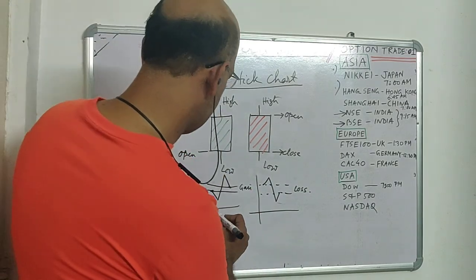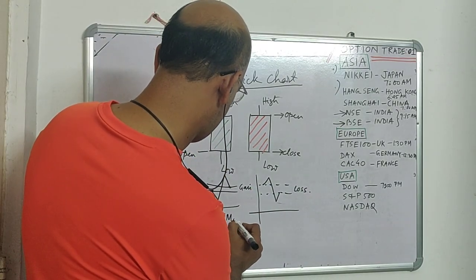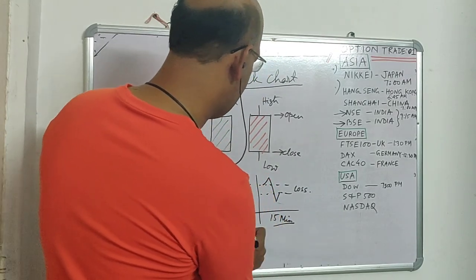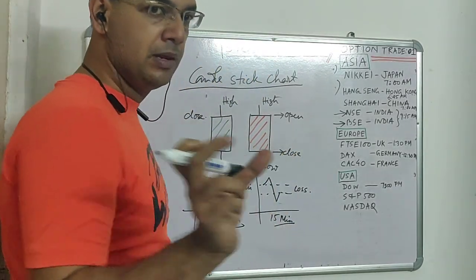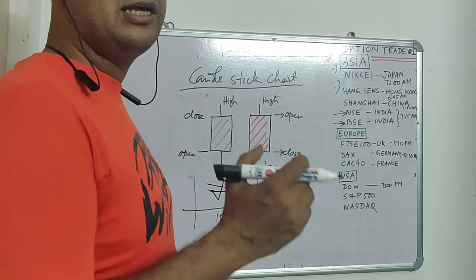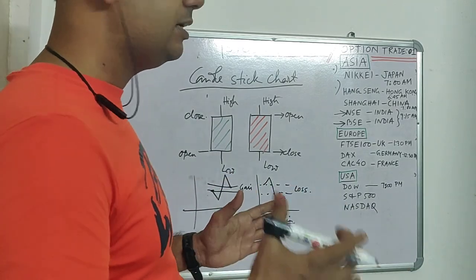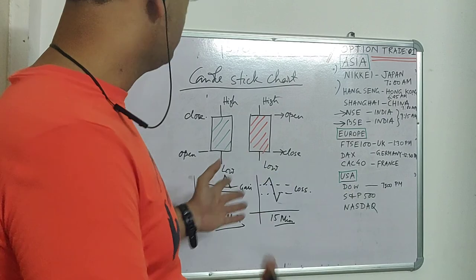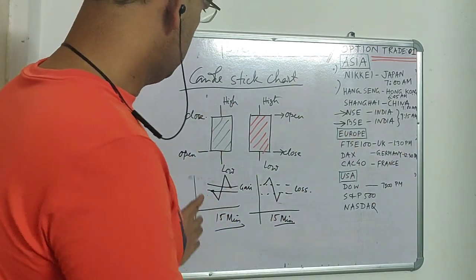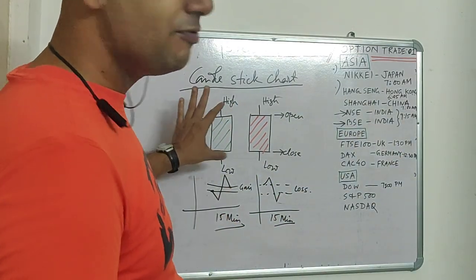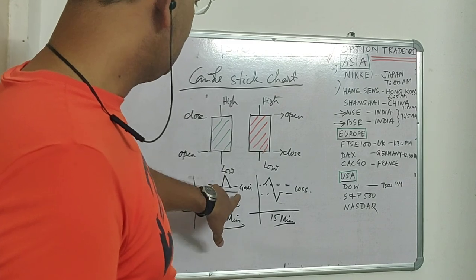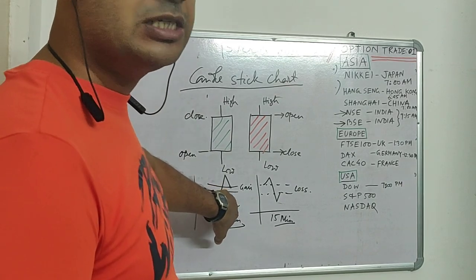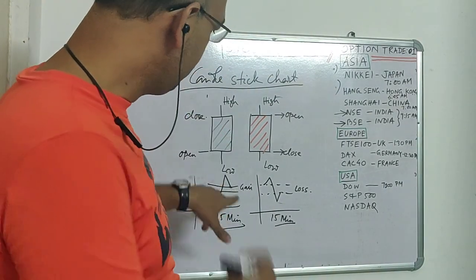Similarly, you can divide a candle into any time block — 1 minute, 2 minutes, 10 minutes, 15 minutes, 1 hour, 1 day, 1 week, or 1 month. If it is a 15-minute candle, the range of time covered by that candle is 15 minutes, and it shows the price variation within that 15-minute period.